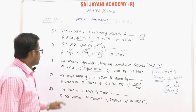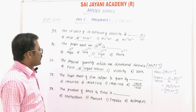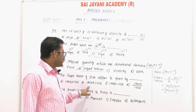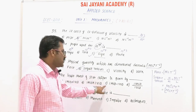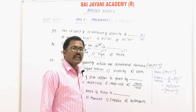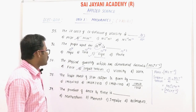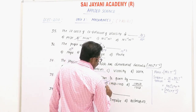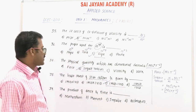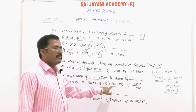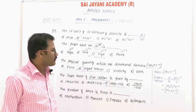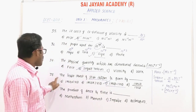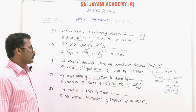Question number 38: the least count of a slide caliper is given by — option C: 1 MSD minus 1 VSD. The least count equals 1 main scale division (MSD) minus 1 vernier scale division (VSD). Option C is the right answer.